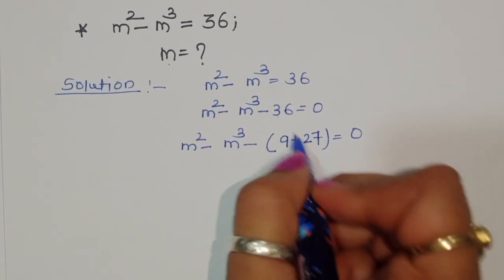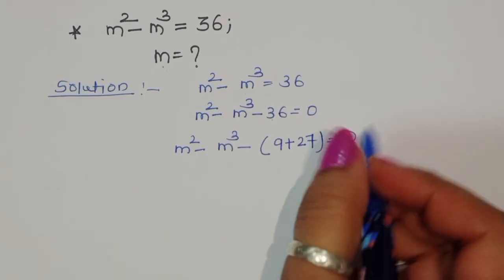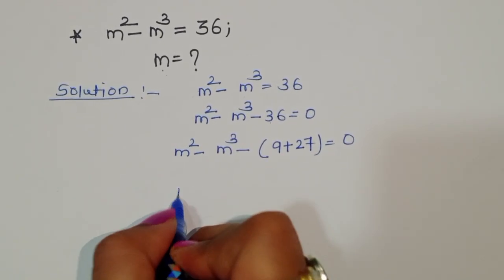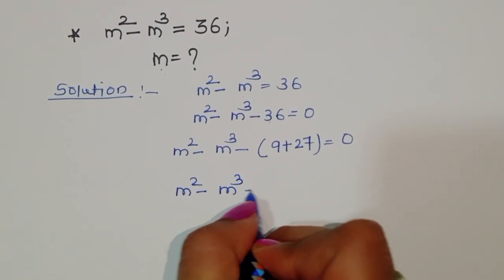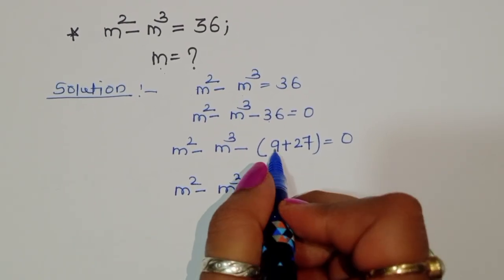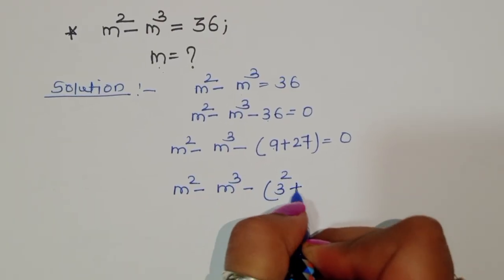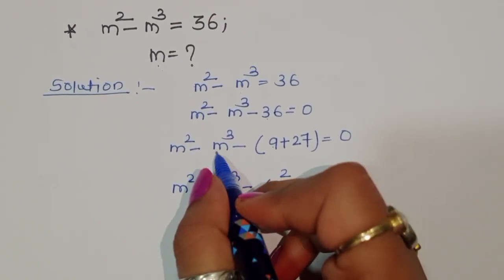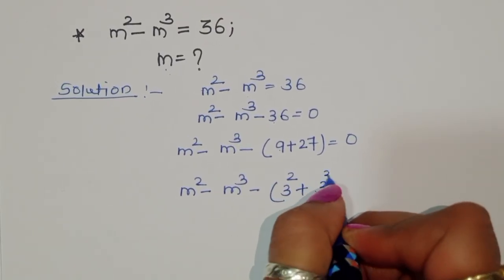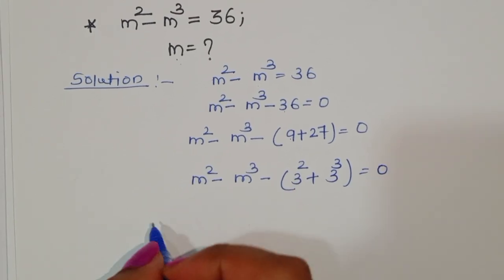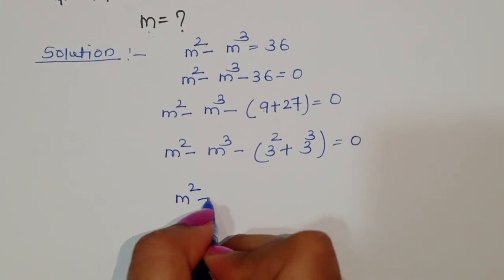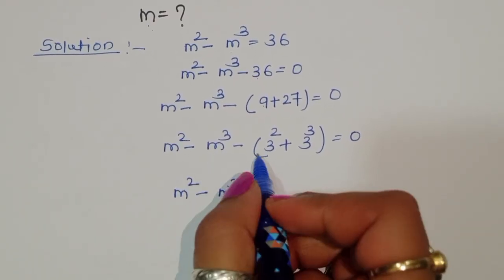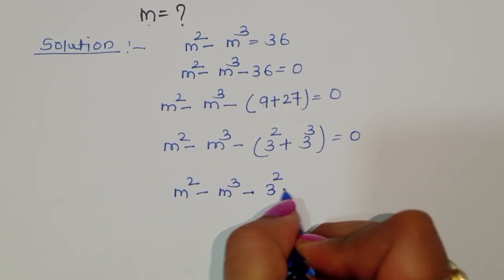We are converting 36 into 3 squared and 3 cubed, which is 27. So we rewrite the equation as m squared minus m cubed minus 3 squared minus 3 cubed equals 0.